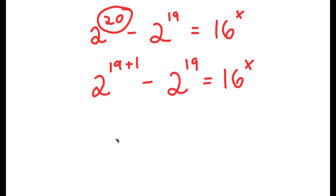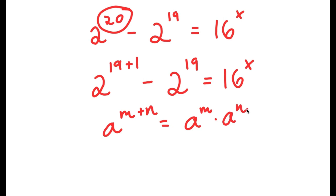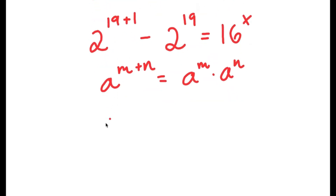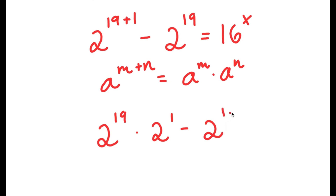Now if I have something in the form a to the power of m plus n, this is equal to a to the power of m times a to the power of n. So in this case, I have 2 to the power of 19 plus 1, and this is going to equal 2 to the power of 19 times 2 to the power of 1. Now I have this minus 2 to the power of 19 is equal to 16 to the power of x.